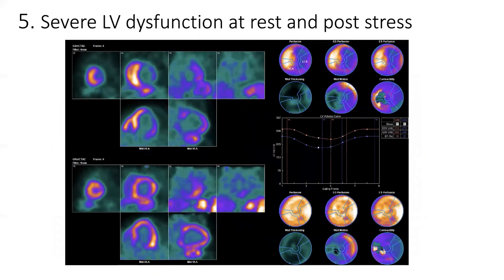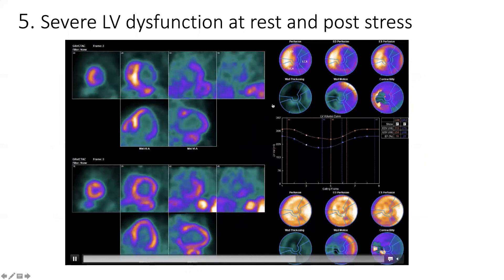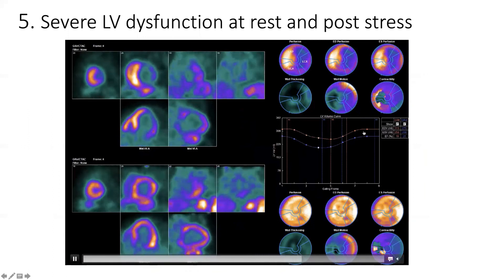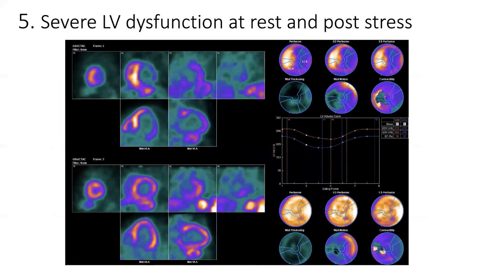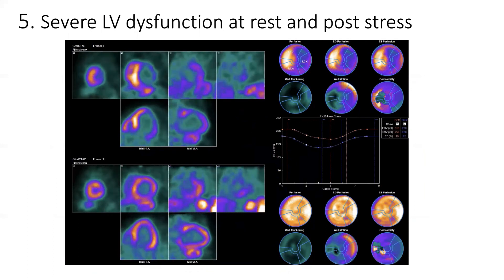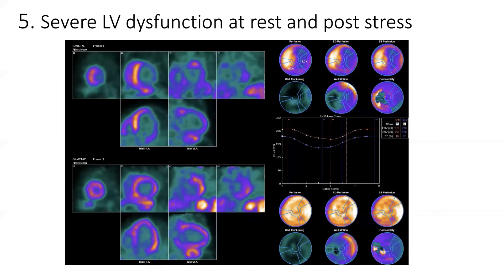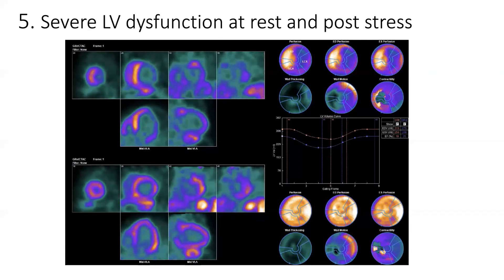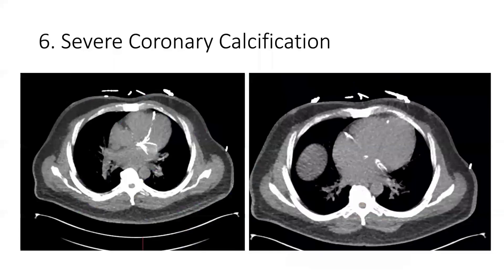Another sign is related to severe LV dysfunction at rest and post-stress, as you can see from the LV curves. So in the ischemic cascade, we have a large area of hypoperfusion as the first step, then LV dysfunction as the second step, and LV function impairment as the third step — and all steps of this ischemic cascade are covered by our PET analysis.